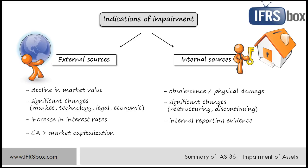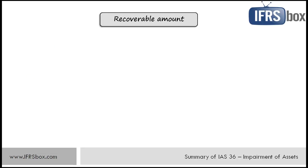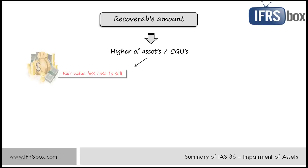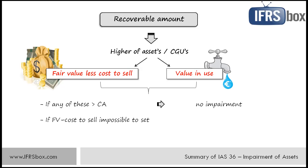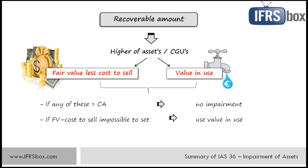If you find any of these indicators of impairment, you need to calculate impairment loss as a difference between carrying amount and recoverable amount. Recoverable amount is the higher of an asset's or cash generating unit's fair value less costs to sell and value in use. It's not always necessary to determine both — just one might be sufficient, because if just one of them is higher than the asset's carrying amount, there is no impairment. Also, when there is no basis for a reliable estimate of fair value — particularly when the asset is not trading in an active market — value in use might be considered as the asset's recoverable amount.